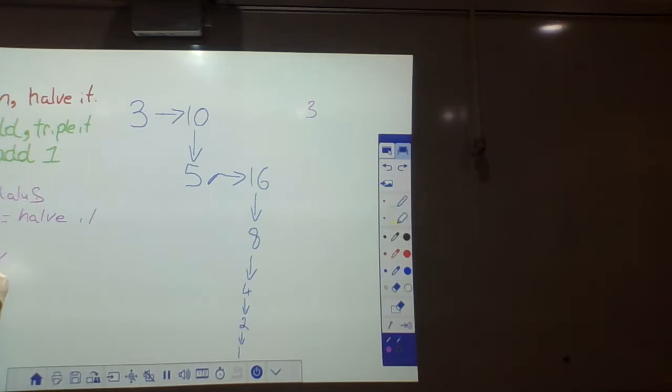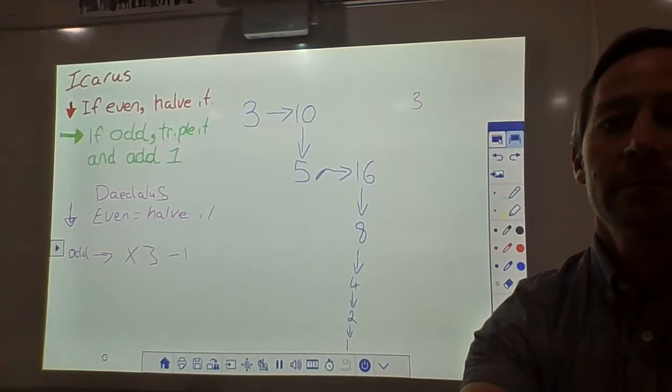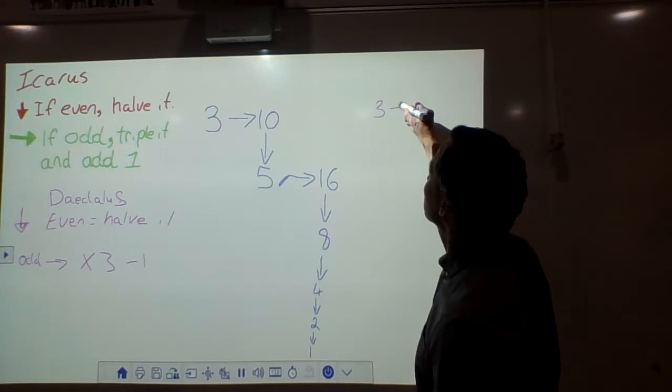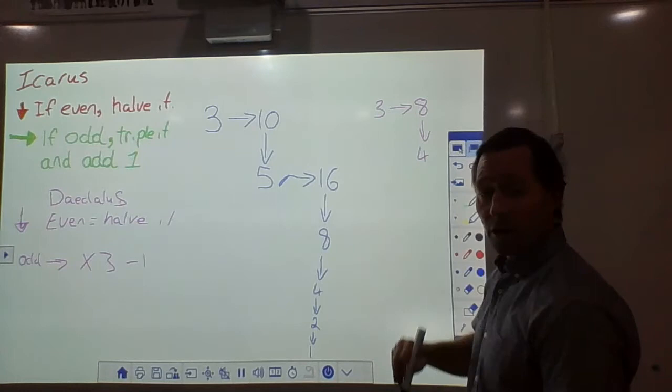If it's odd, we end up, times it by three, and then we minus one. So, three. Can you see that one there? We're in there. So, three. It is odd. So, we times it by three, we minus one. Times it by three, minus one, equals eight. Eight. Odd or even? It's even. So, we halve it. Four. Odd or even? It's even. So, we halve it. Odd or even? Even. One.